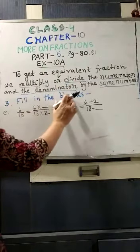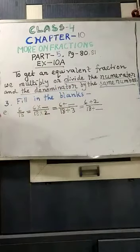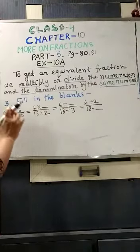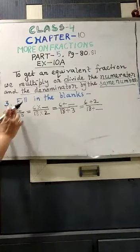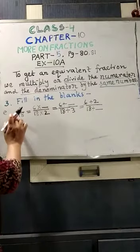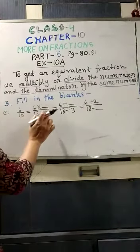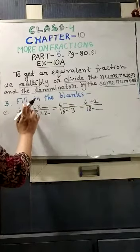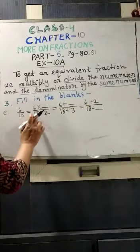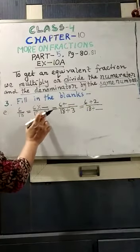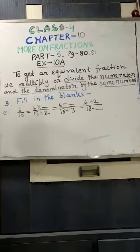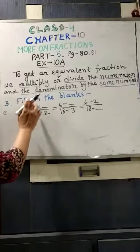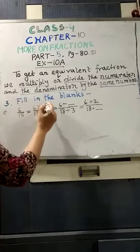Number 3, fill in the blanks. In our previous class we also did fill in the blanks. Here in 3E I have written the sum 6 by 18. This is the number and we have to find out the equivalent fractions. The denominator 18 is multiplied by 2, so we have to multiply the numerator also by 2.